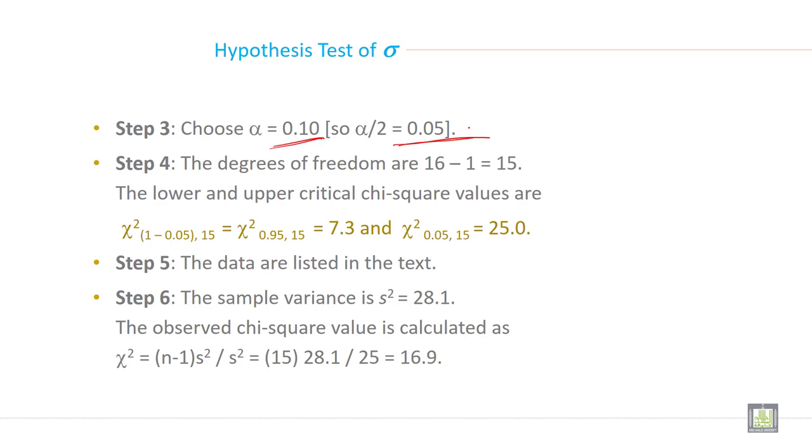So step 4, the degrees of freedom are 16 minus 1, so it is 15. The lower and upper critical chi-square values are 7.3 and 25.